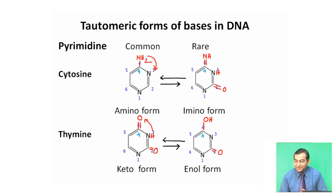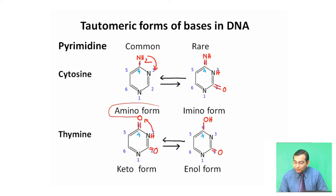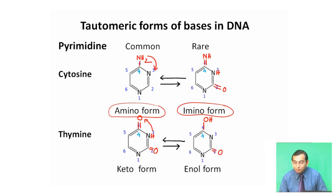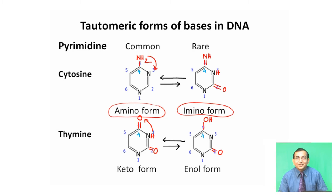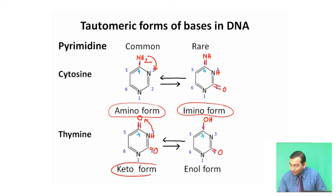Tautomeric forms of bases are shown in the figure. In pyrimidine, it consists of two bases: cytosine and thymine. The common form of cytosine is the amino form, which changes to the less stable imino form, where hydrogen atoms move from the fourth position of the base to the third position. Similarly, in the case of thymine, there is a shift of hydrogen atoms from the third position to the fourth position, as a result of which the keto form changes to the enol form of thymine.